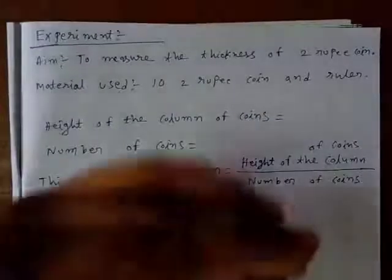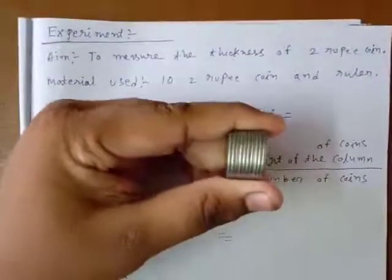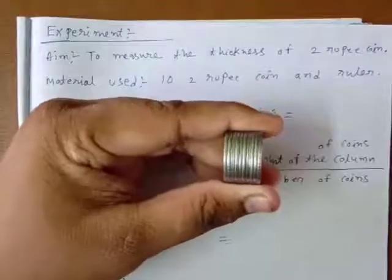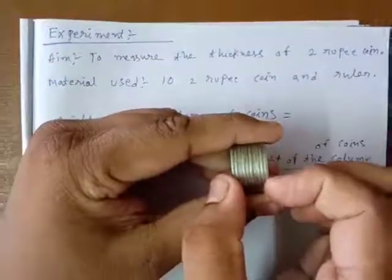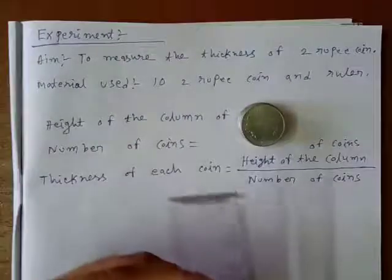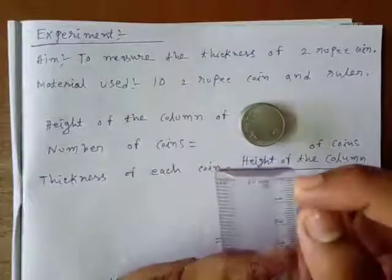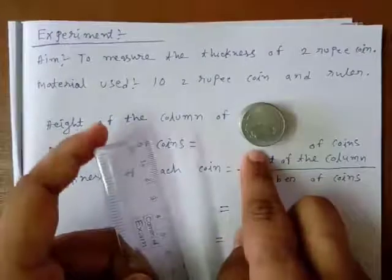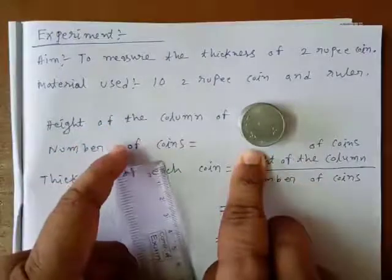First I am taking here 10 two rupee coins. Now let me measure the height of this column, the 2 rupee coin column. If I put it like this and measure the height, then it may happen that the 0 line is not met with the first coin.